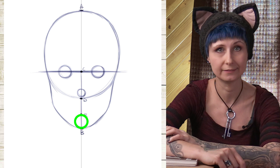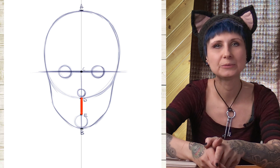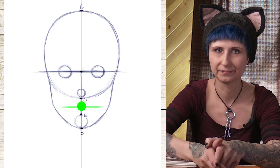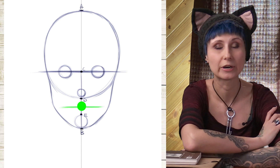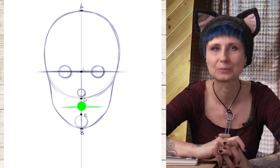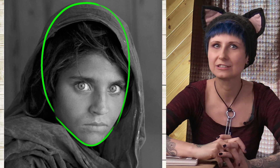Let's throw one more halfway point in there. Let's take the distance between D and E and make F, and put a line through it. This is where the mouth will go. Crazy how everything is half of a half of a half, and all of it happens on the lower half of the entire head. We tend to think that the face takes up most of the head because it's the most important part we interact with, but the reality is that the face is really just on the bottom half of the head.